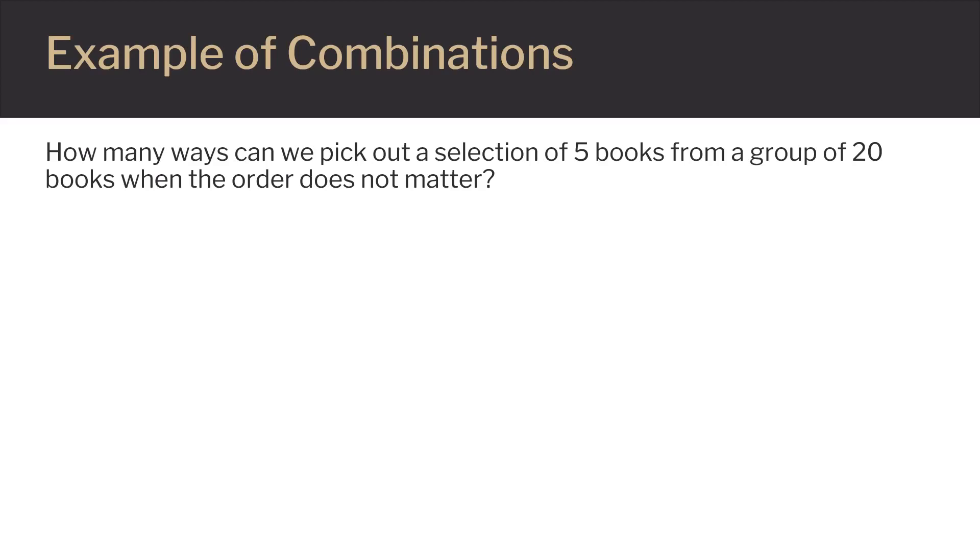Let's look at an example to see how we would use this formula. Say you go to a bookstore and find 20 books you want, but you can only afford to buy 5 of them. How many ways could you select 5 books from a group of 20?